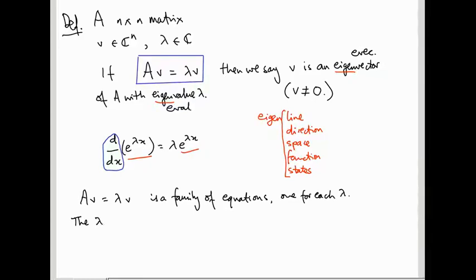So the lambdas for which Av = λv has a solution v not equal to zero are called the eigenvalues of A. Not every number occurs as an eigenvalue of A, so it's a problem: how do you figure out which lambdas are eigenvalues of A? How do you figure out for which lambdas does this equation have a solution that's not zero?